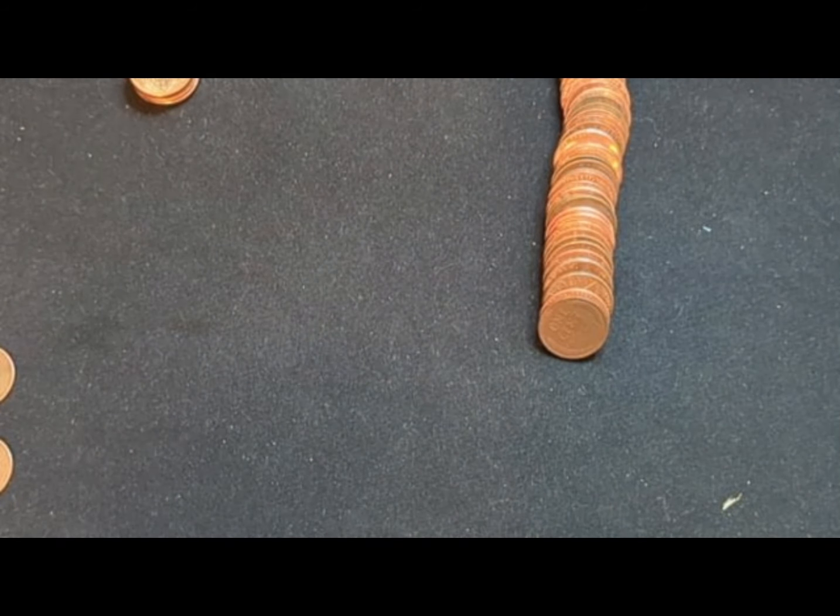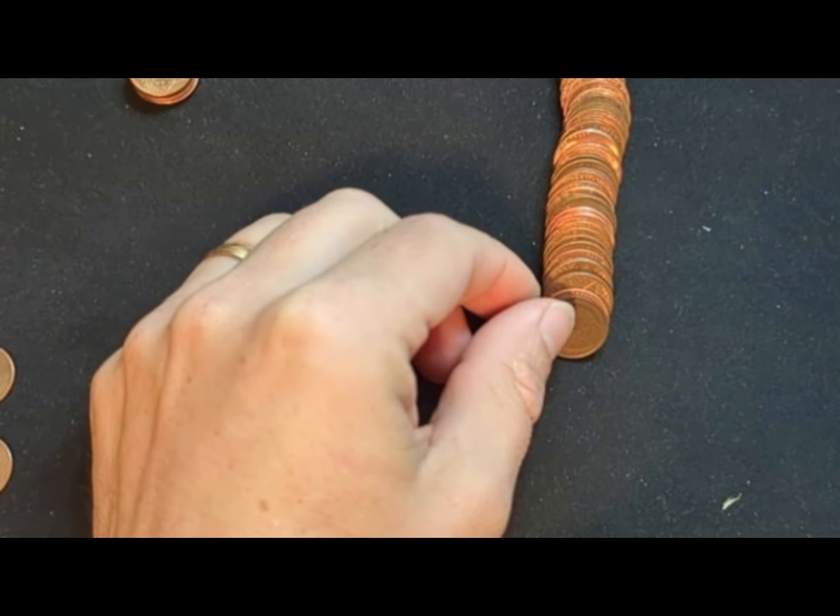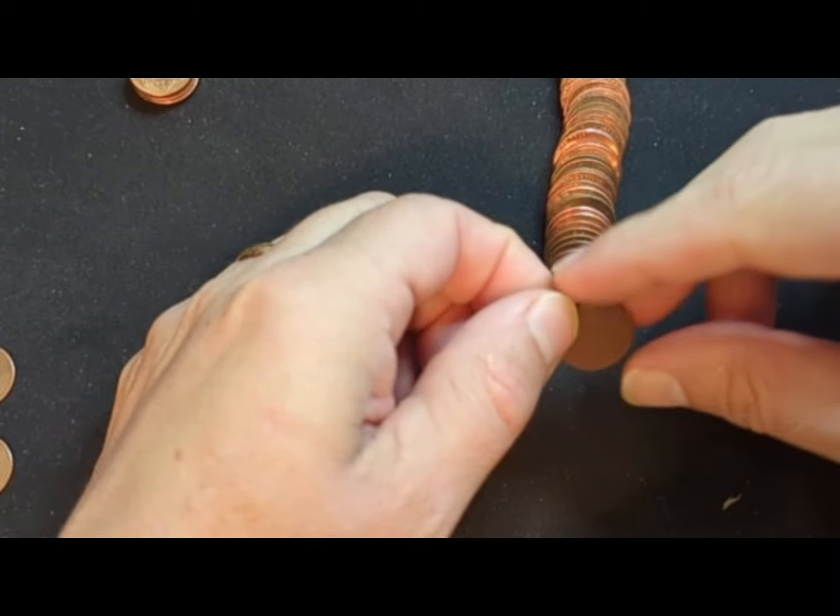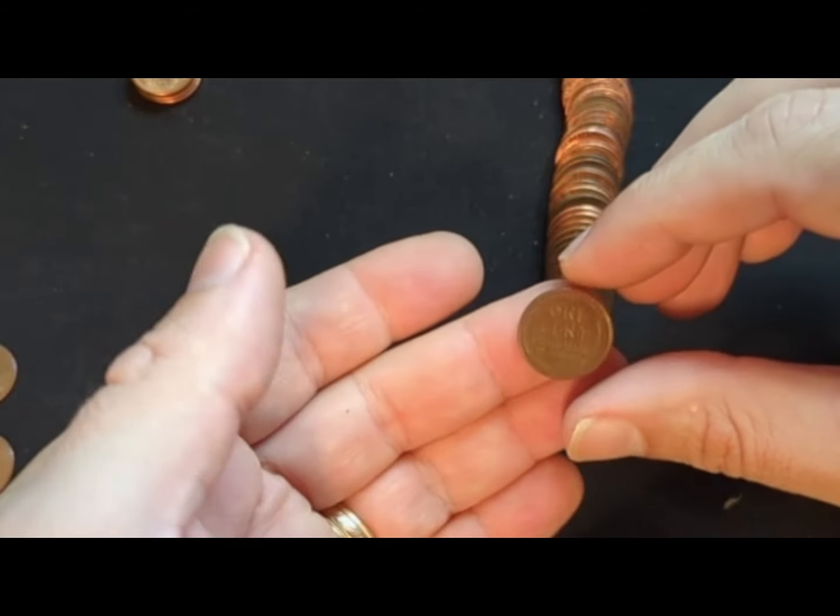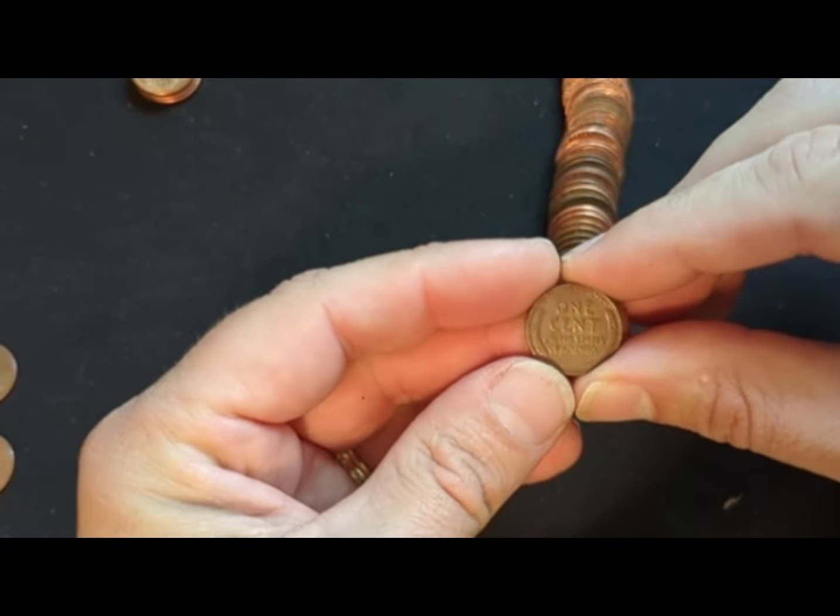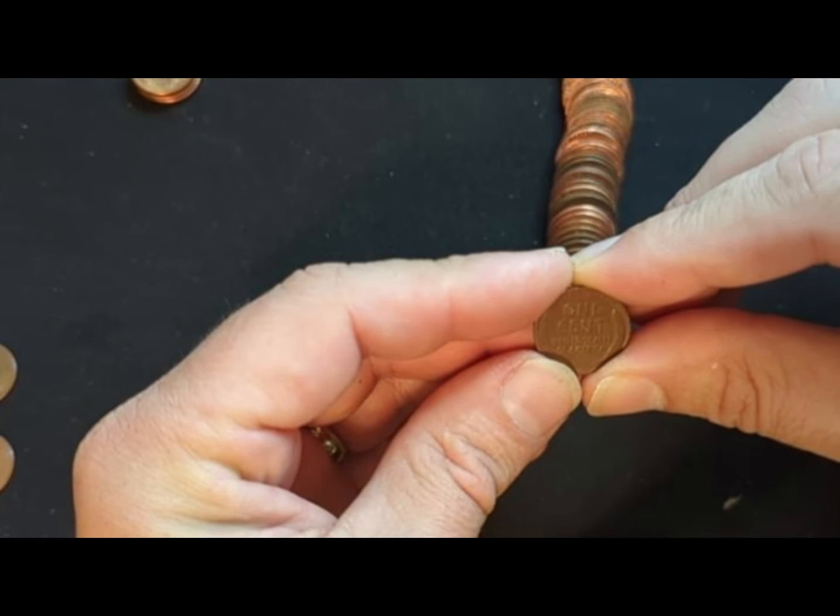Alright, roll number eight. Now these rolls are starting to pick up. Reverse ender there, or not ender, reverse side facing. That is a nice conditioned wheat cent. Let's see what the date is. In three, two, one. Flip.